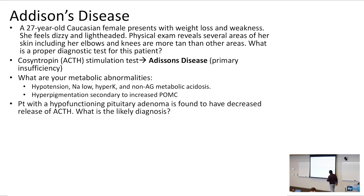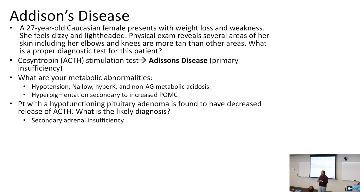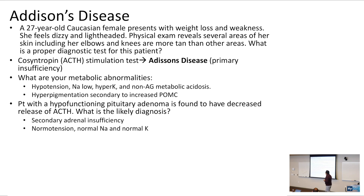A patient with a hypofunctioning pituitary adenoma is found to have decreased release of ACTH — what is the likely diagnosis? Decreased release of ACTH is called secondary adrenal insufficiency. Primary adrenal insufficiency occurs at the primary organ, which is the adrenal gland. Secondary — you think about the brain. You're going to get normal tension, normal sodium, and normal potassium.